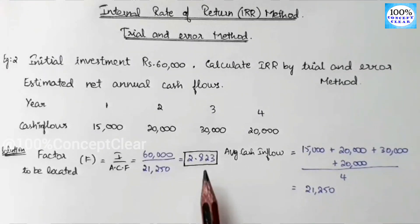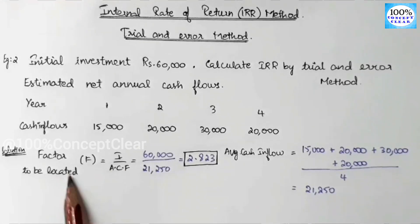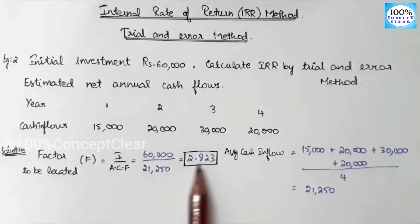We divide to get 2.823. This is the F value — the factor to be located, that is the PV factor. We need to locate 2.823.